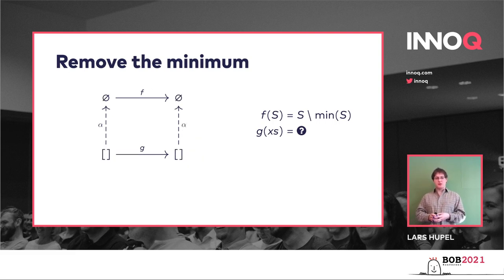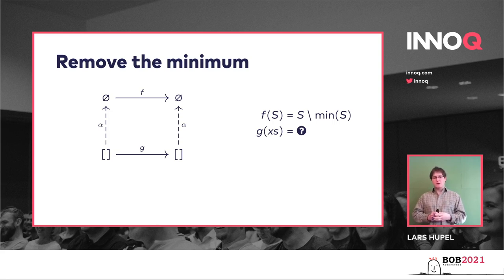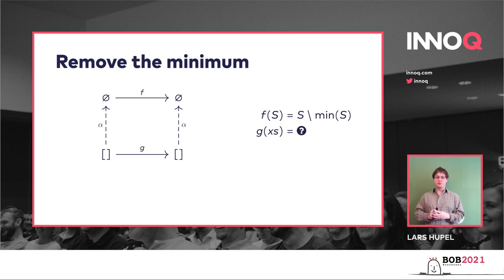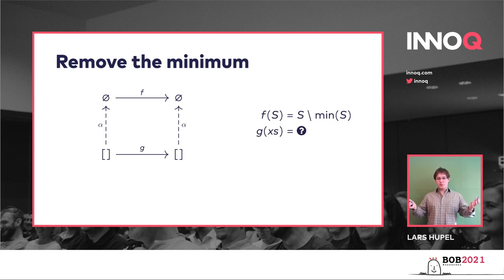Here's another catch: what if we start out with the empty list? A naive implementation of G might throw an error, but it actually needs to return the list unchanged. Because if you take the empty set, you can try to remove anything — 5, apples, it doesn't matter — you always get the empty set back. So your concrete G function needs to return the empty list unchanged. We can do this for all sorts of operations on sets and lists.